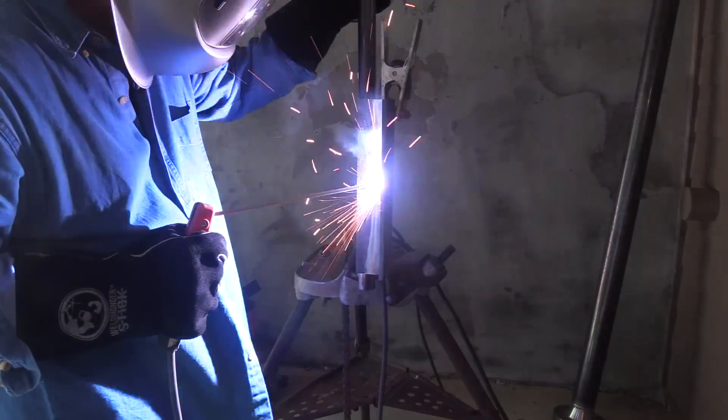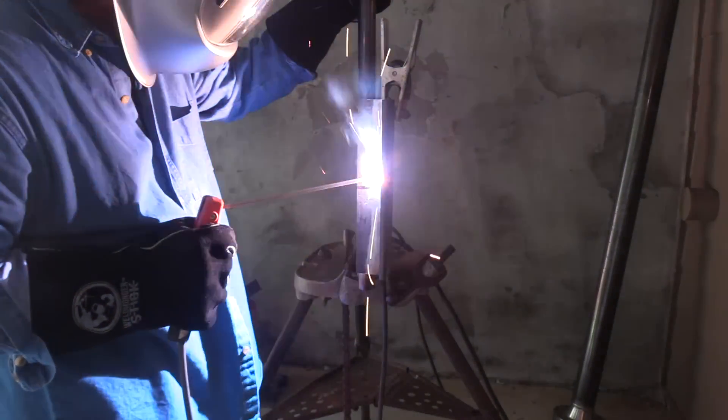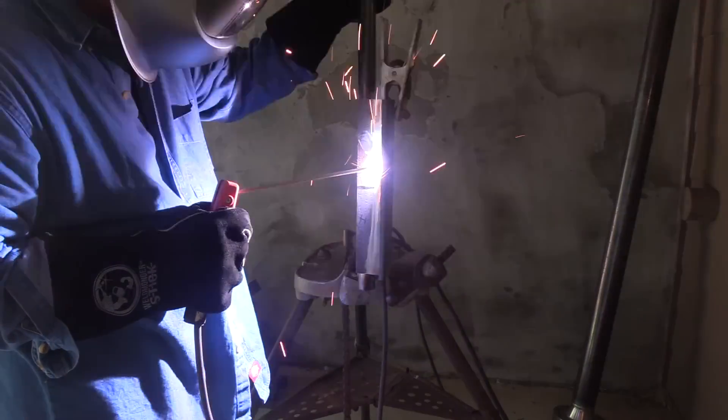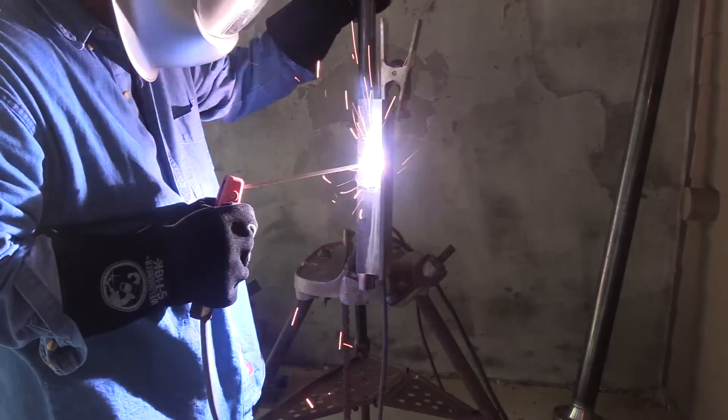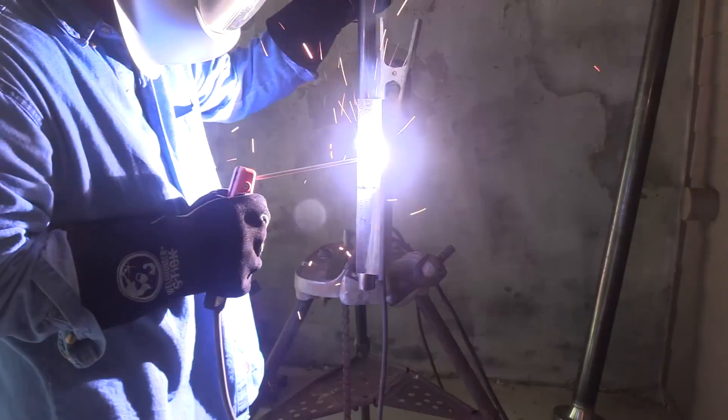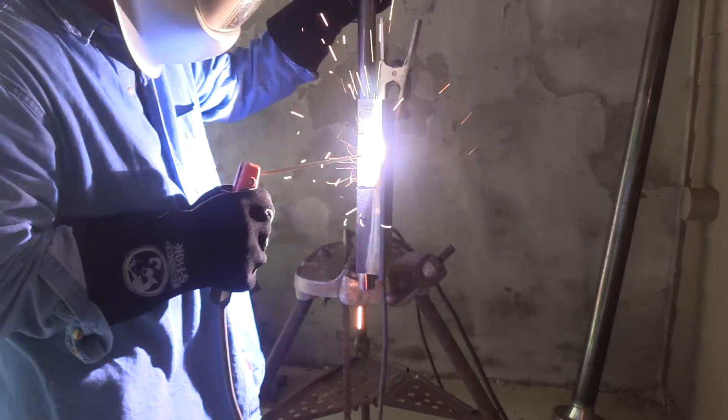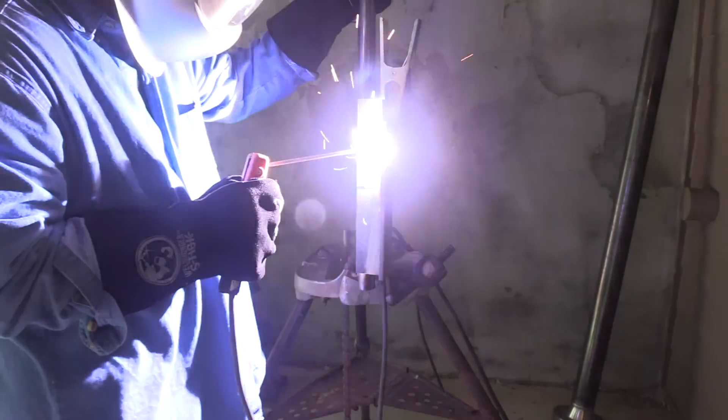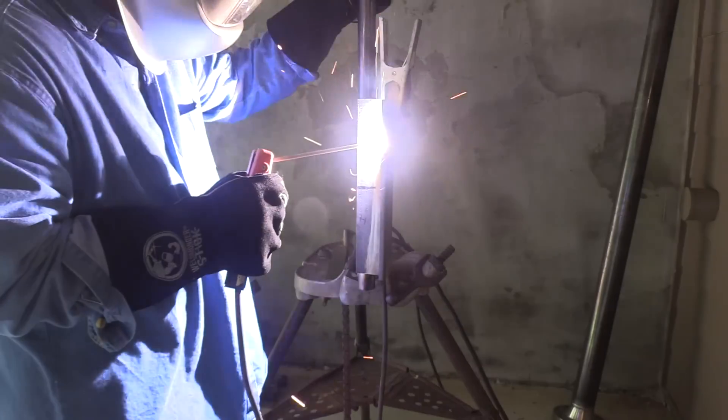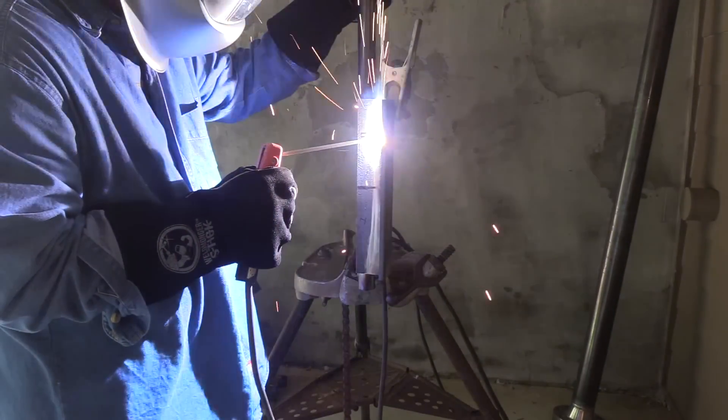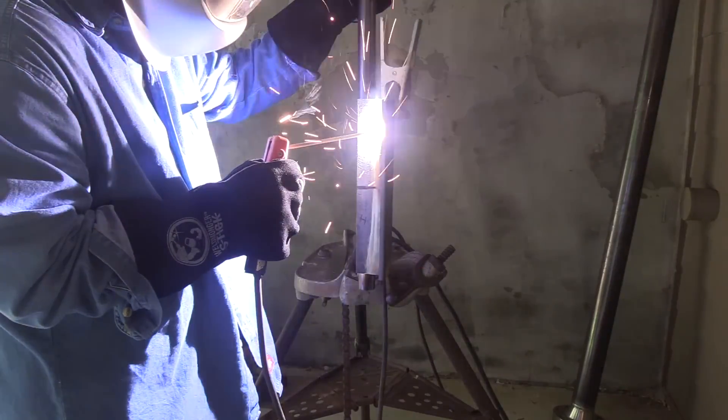So before we take a look at some close-up arc shots, let's talk about rod angle a little bit. I would recommend a slight push angle. Don't get carried away with your rod angle. I would also recommend in your mind to kind of shoot for a straight in 90 degree. If you're like me at all, when you're under the helmet, things kind of can creep on you. And so I always wind up using a little bit more of a push than I think I'm doing. So if I start off with a 90 degree angle, I usually wind up with only a slight push and that usually works.